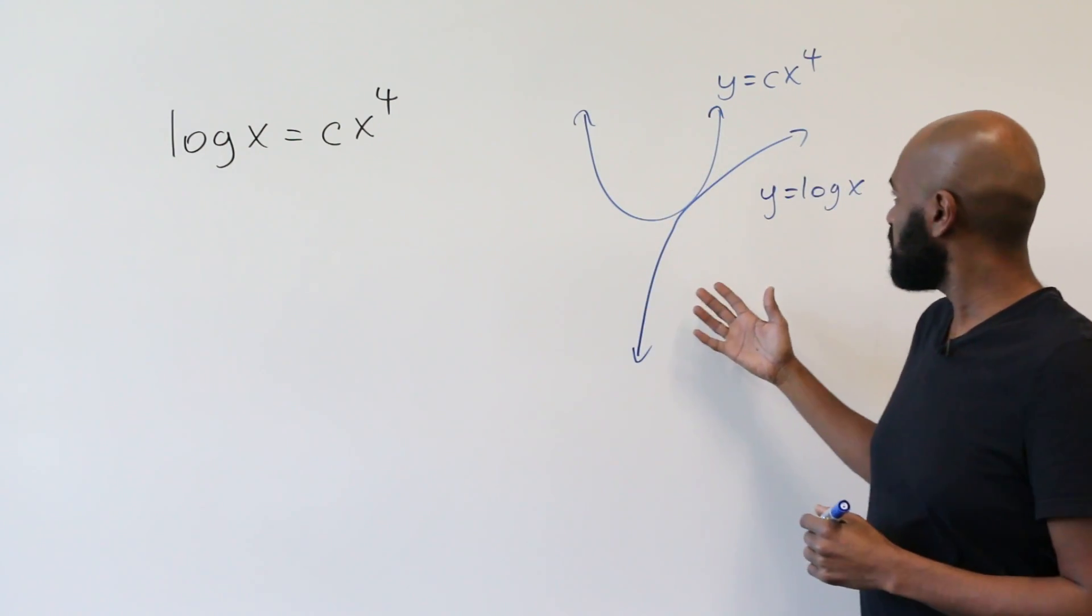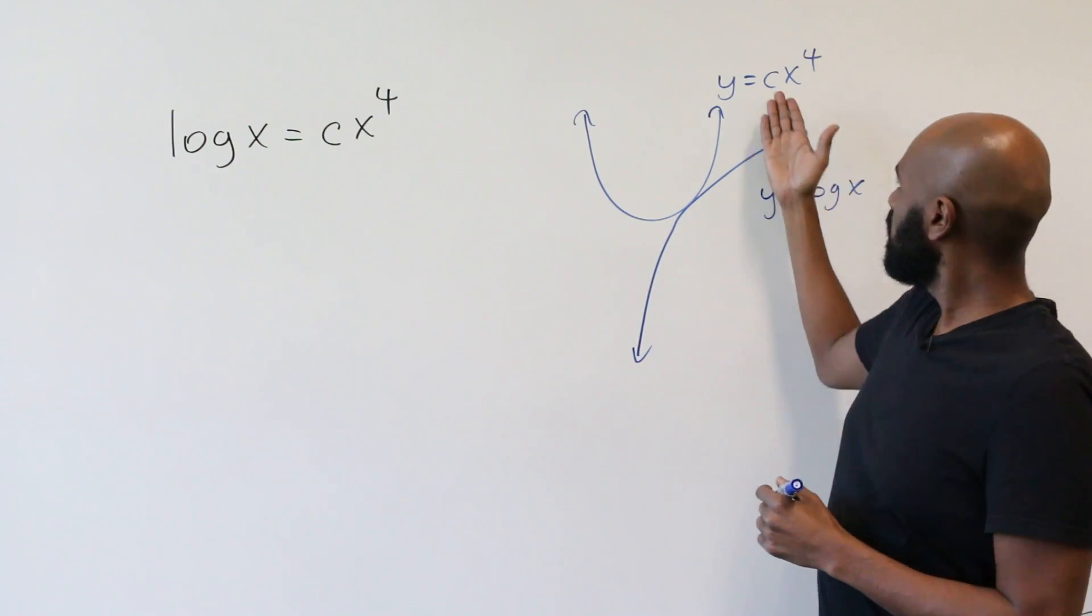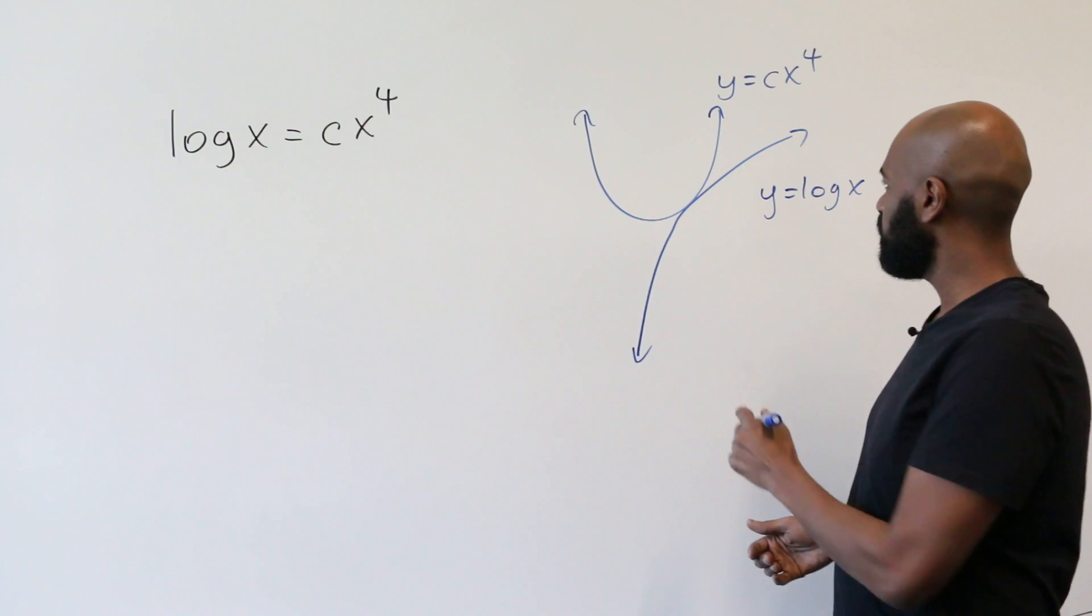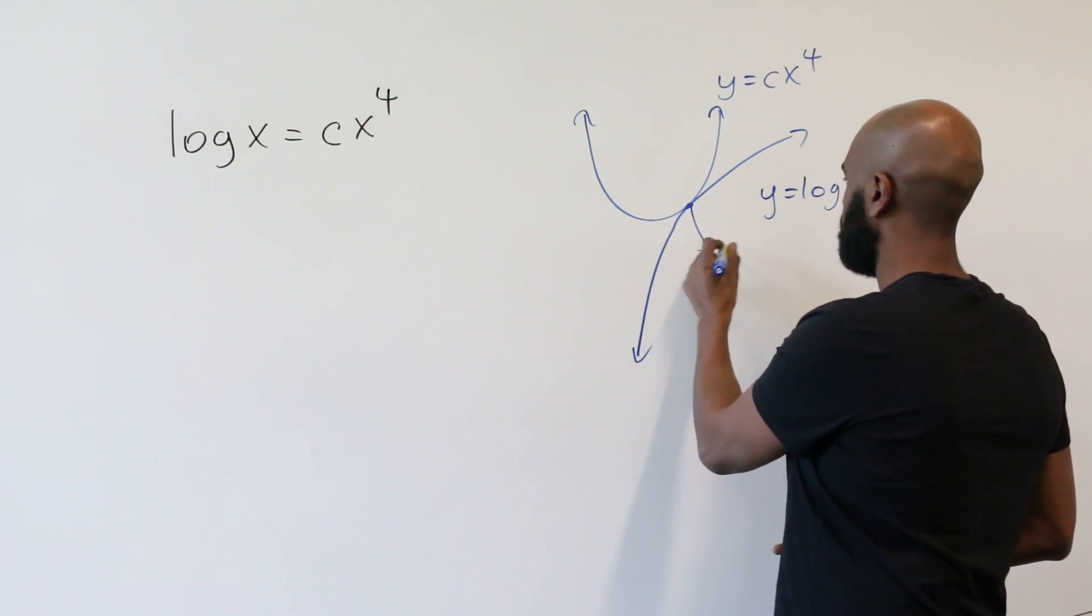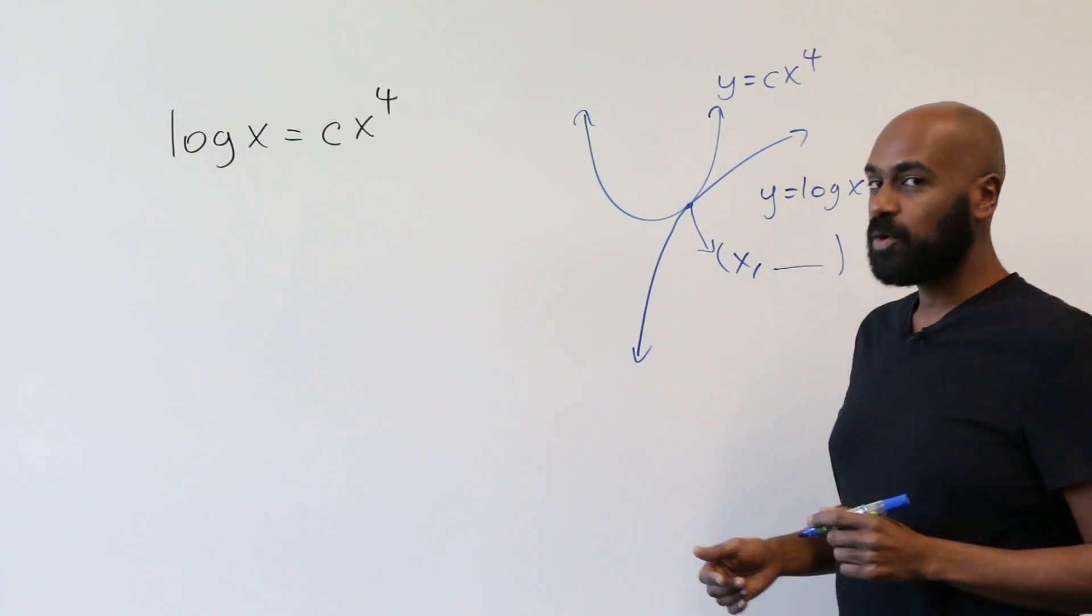So here I've drawn heuristics of the graphs of the two functions. Here we have y equals log x and then here we have y equals c x to the fourth for a positive value of c. And here's an intersection point. I'll abuse notation and let its x coordinate be x. We don't necessarily know what its y coordinate is.